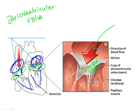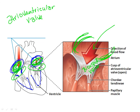Oxygenated blood comes in from the lungs and fills the left atrium, and the same thing is happening on both sides of the heart simultaneously. Both atria are filling, both ventricles are filling — they fill and eject simultaneously: the atria first, then the ventricles. As your left and right atria fill, the pressure in those chambers increases, pushing against the valves, which open downward and allow blood to flow into the ventricles.